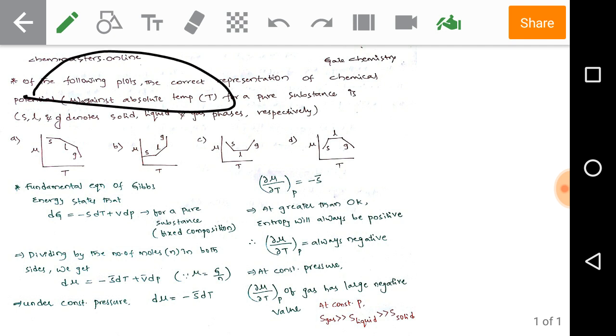Of the following plots the correct expression or representation of chemical potential mu against absolute temperature T for a pure substance is, okay we need to find it here and on the graphs SLG indicates solid liquid and gas.